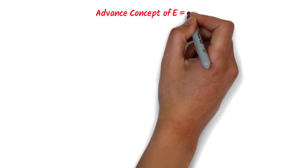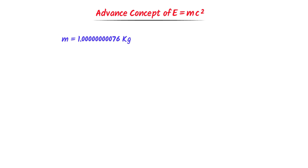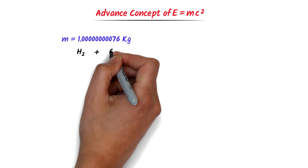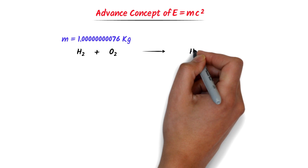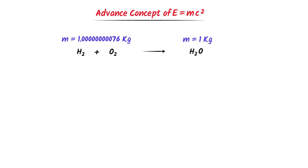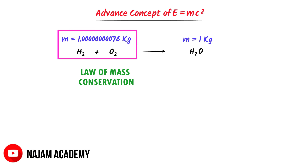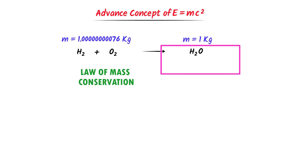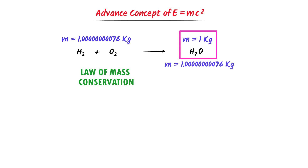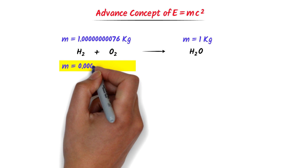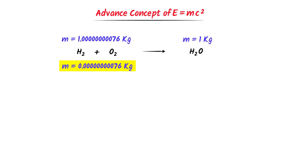Now let me teach you the advanced concept of E equals mc squared, and prove that mass and energy are interchangeable. Consider that I take 1.00000076 kg of reactants — hydrogen gas and oxygen gas. Now they both react together to form 1 kg of water, H2O. According to the law of conservation of mass, if there is 1.00000076 kg of reactants, then there must also be 1.00000076 kg of products. But here, there is only 1 kg of product.